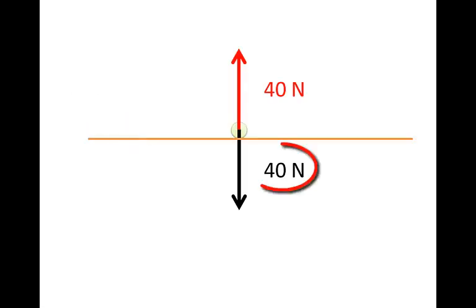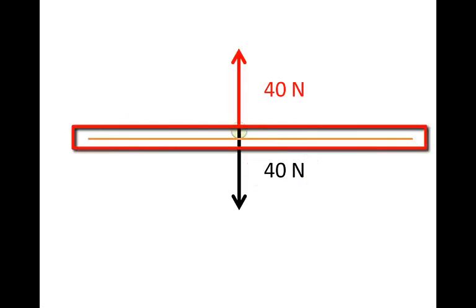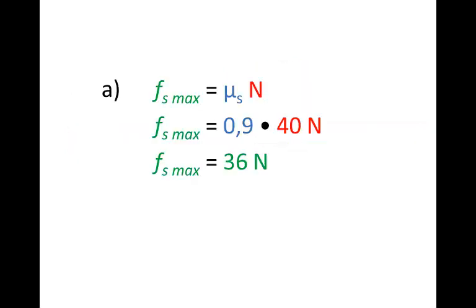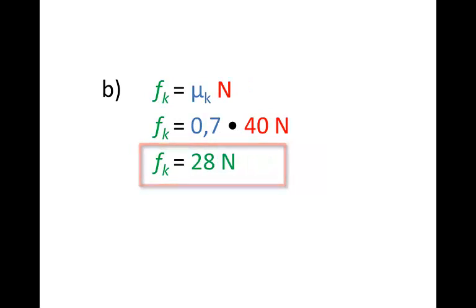So its weight is 40 N. The surface is horizontal, so the normal force is also 40 N. Equal and opposite. So we simply substitute the values in and get our answer, Fs max 36 N, Fk 28 N.